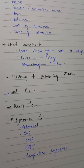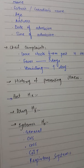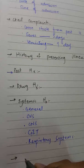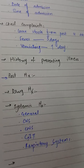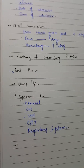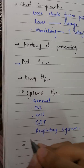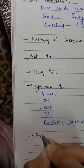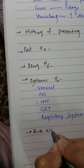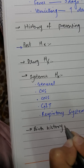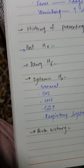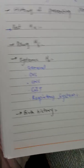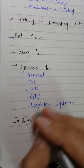Then you are going to ask for birth history. Pediatric history is different from other histories — it is very lengthy and contains lots of different points, such as birth history. In birth history, you are majorly concerned about the birth of the baby, the pregnancy of the mother, and the birth time of the baby.